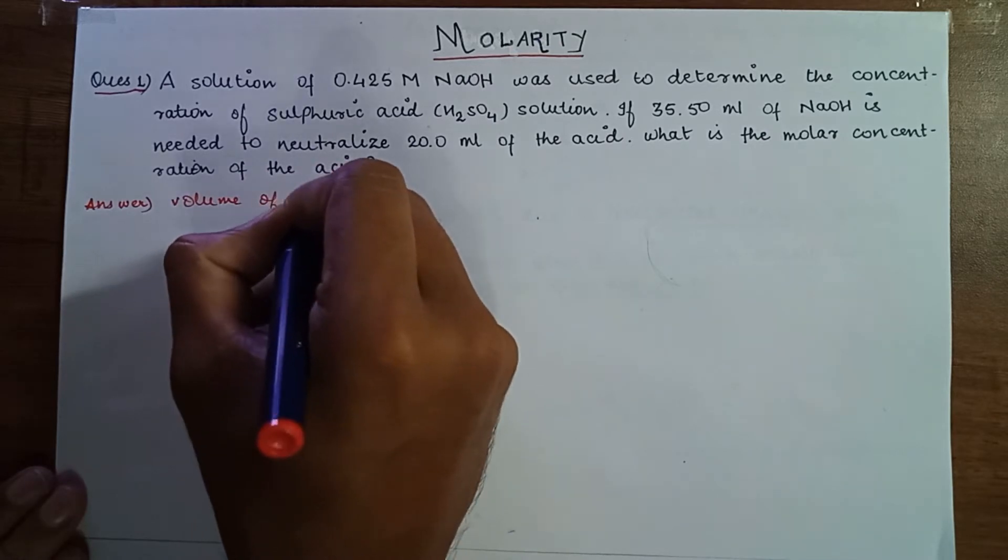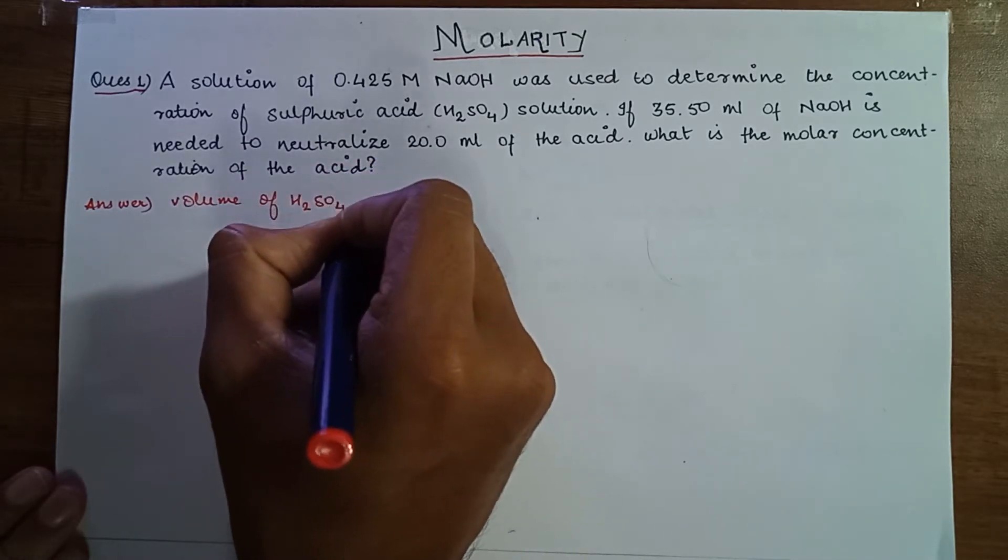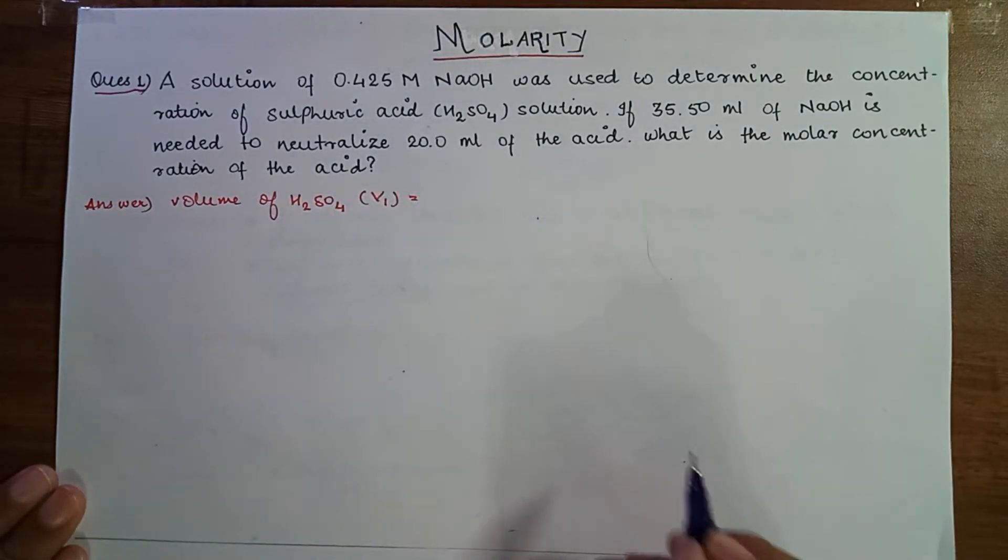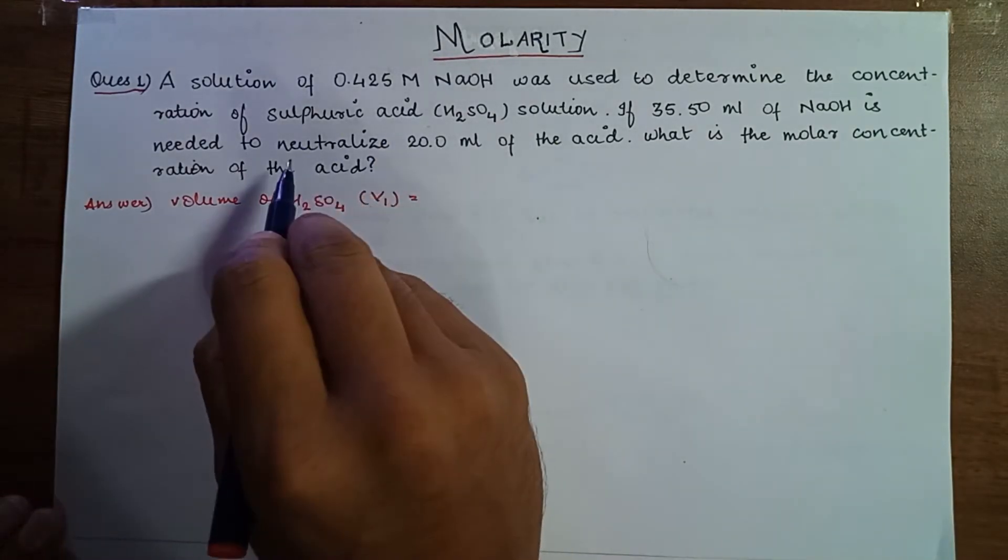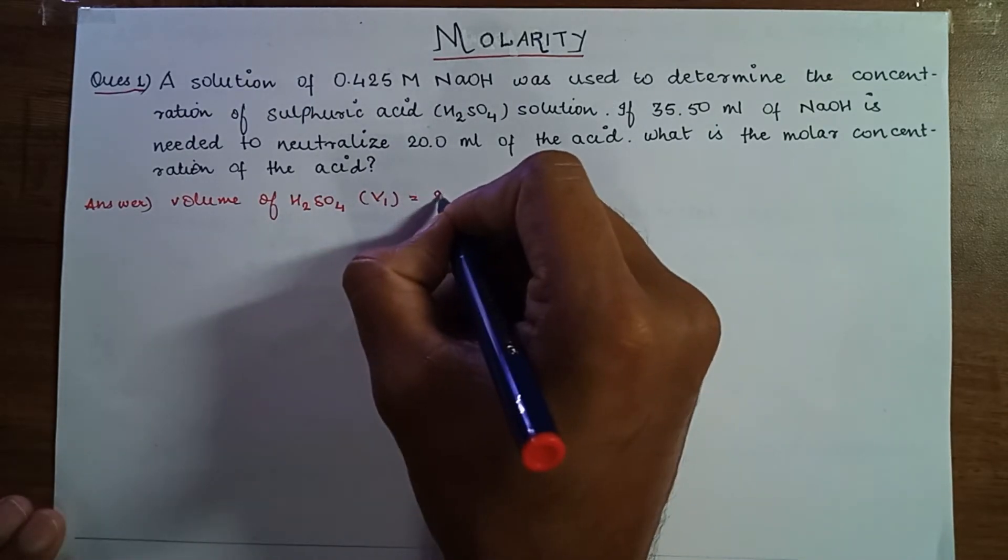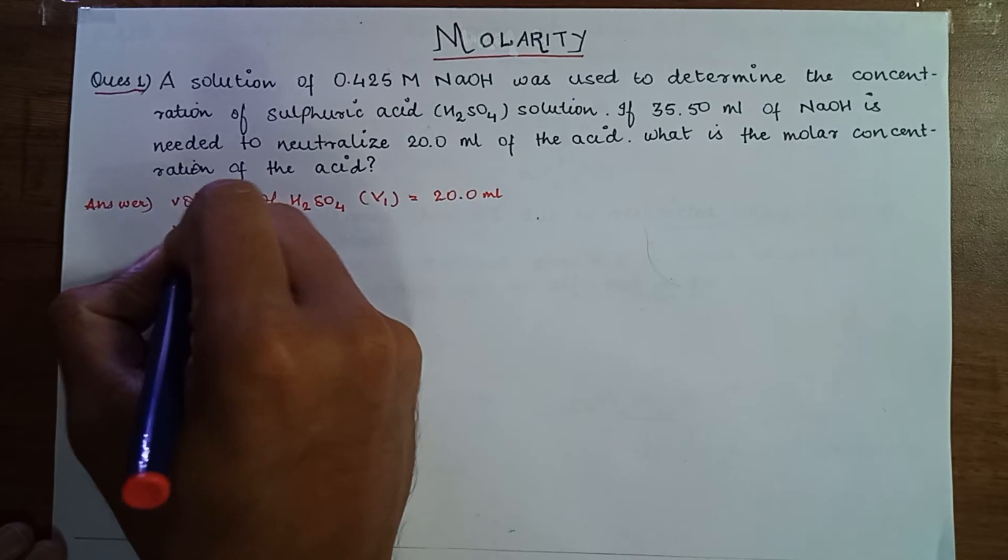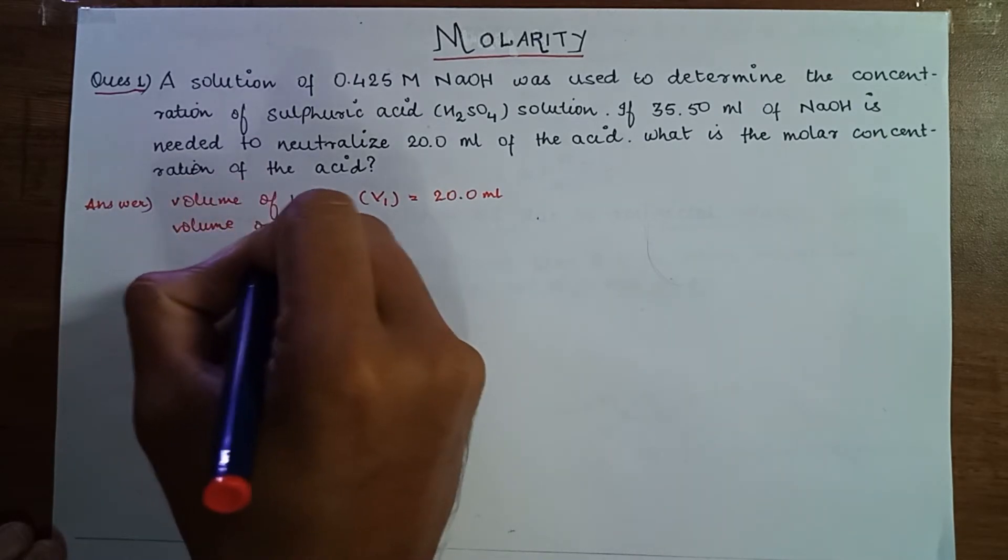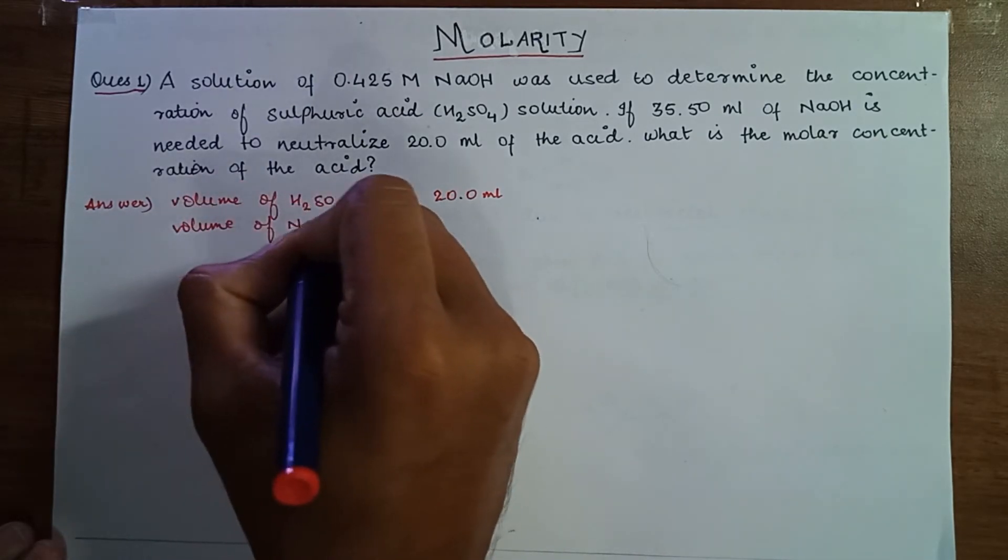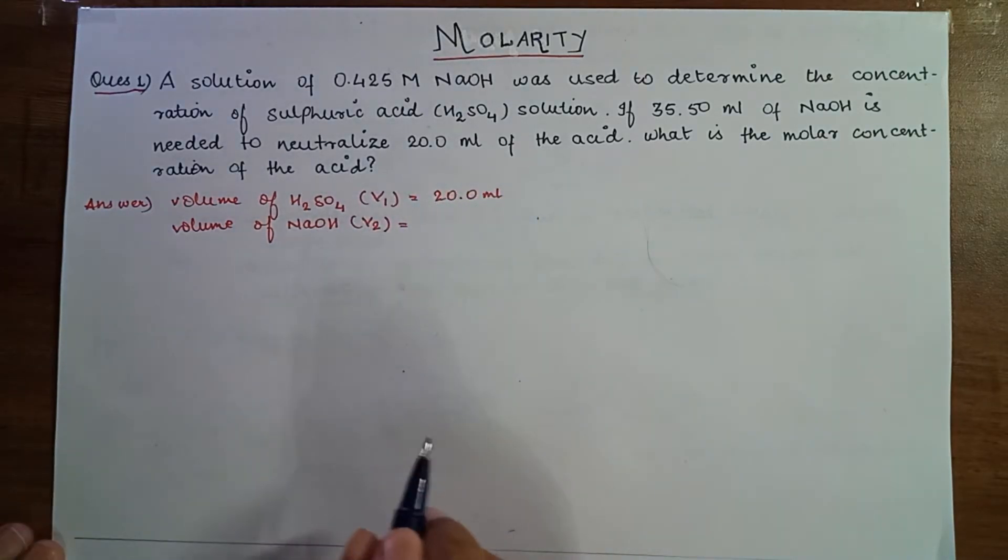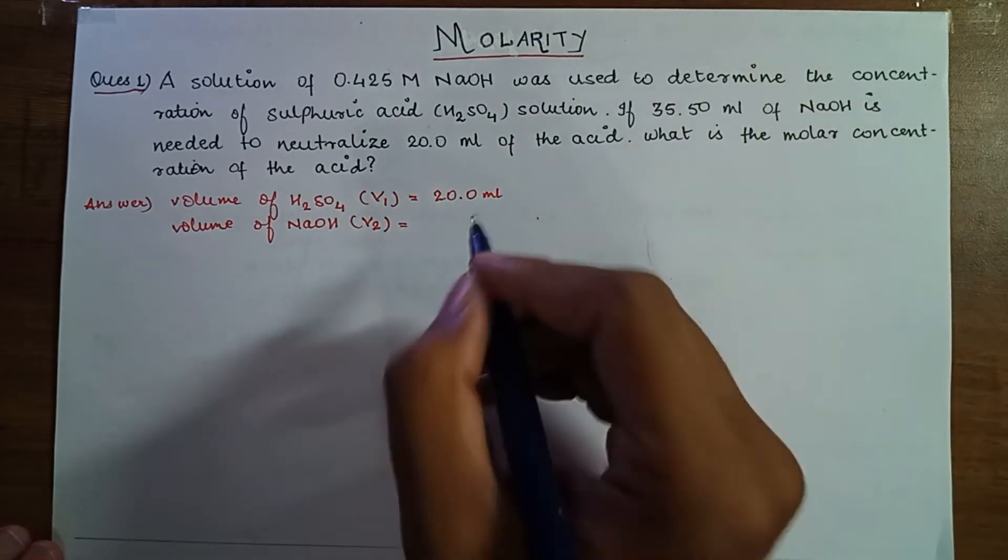Volume of sulfuric acid, that is my V1, it is given 20 ml of acid. So it is 20 ml. Volume of NaOH, that is my V2. Volume of NaOH, it is given 35.50 ml.